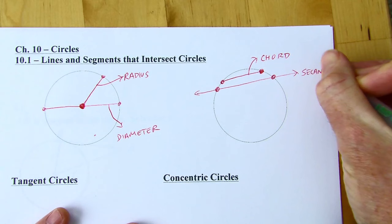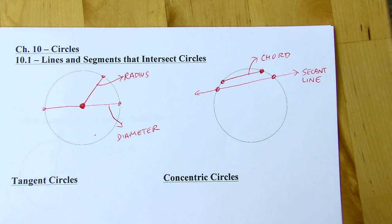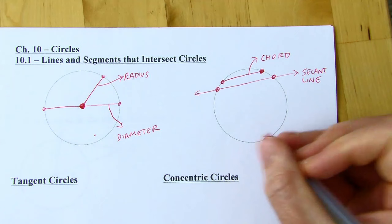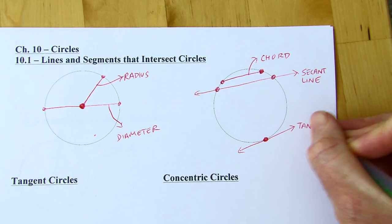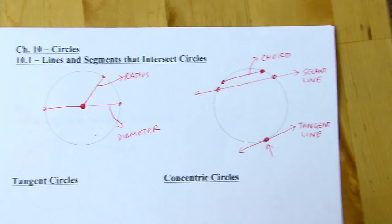Kind of like a chord, it's just a line that extends infinitely. And then if you have a line segment that intersects a circle exactly once — something like this — this would be called a tangent line. And the place where the line and the circle intersect is called the point of tangency.